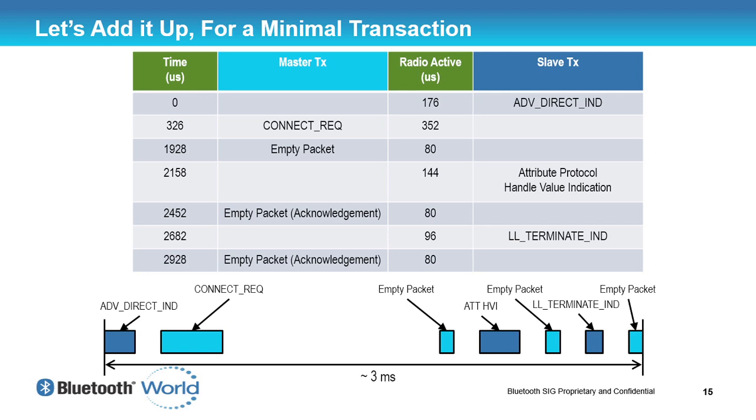Then we have the master send an empty packet because it has no data to send to the slave. You might be thinking: why are you just doing nothing? There's a huge amount of space here. Remember, we've designed this for coin cell batteries. Coin cell batteries like to do small amounts of data infrequently. So this time between the connect request packet and the empty packet allows the battery to recover from advertising. That's what you need to do with coin cell batteries — give them time to recover from strenuous things like sending packets of data.